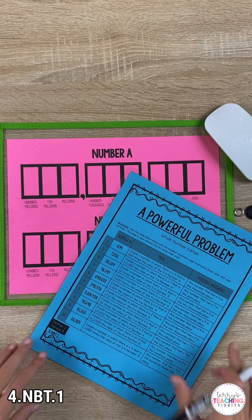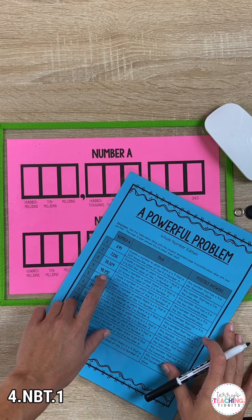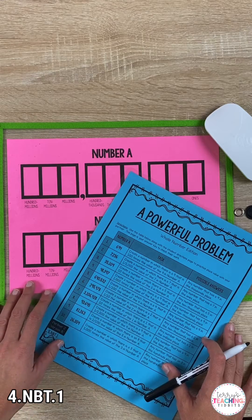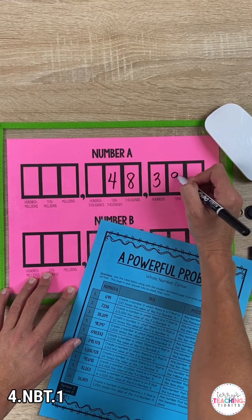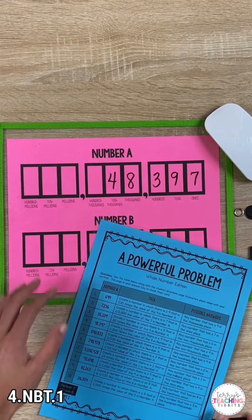Provide your students with one of the numbers listed under the column that says number A. In this example, we're going to use 48,397. Have them write this under number A in the top area of their place value chart.